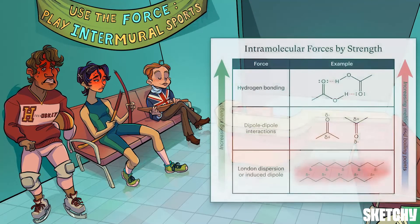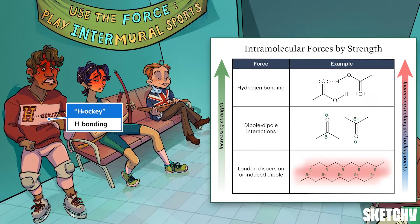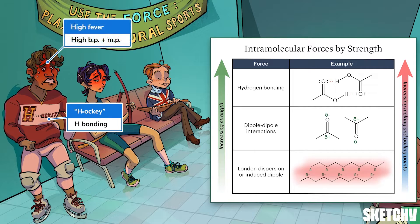The strongest of the intermolecular forces is hydrogen bonding, which we've represented with this hockey player who's the tallest patient in the waiting room. Hydrogen bonding happens anytime a hydrogen atom bonded to oxygen, nitrogen, or fluorine encounters a lone pair on another atom in another molecule. And this athlete's high fever is a great reminder that molecules that can hydrogen bond typically have high boiling and melting points.